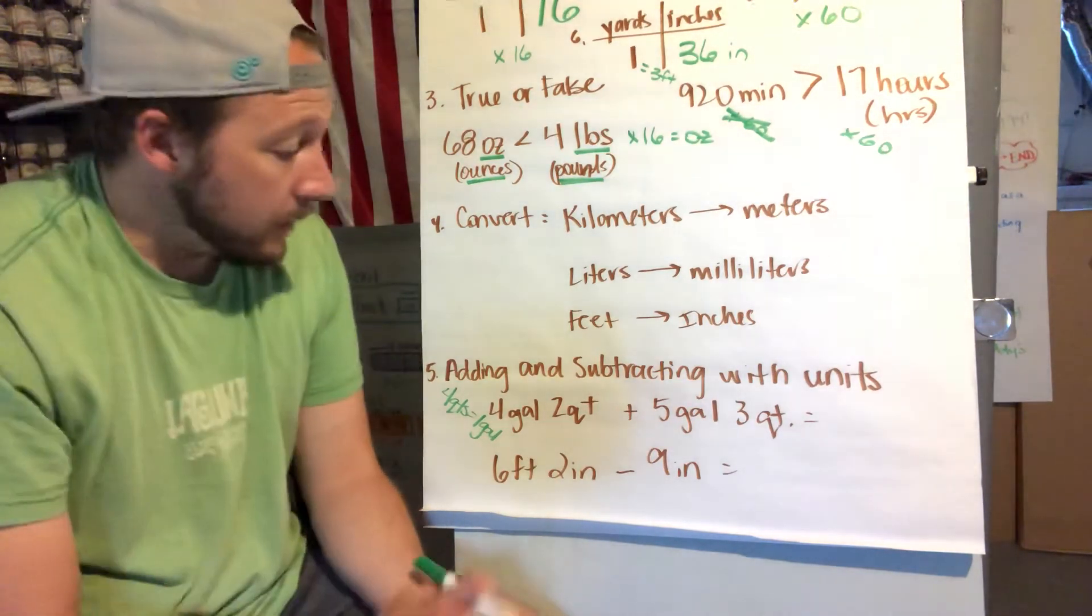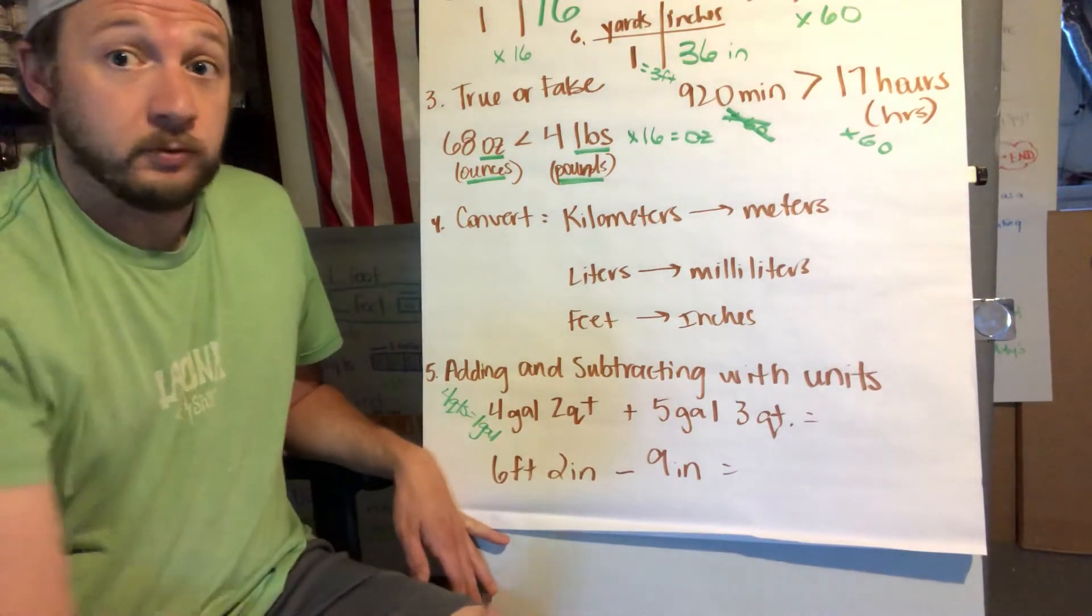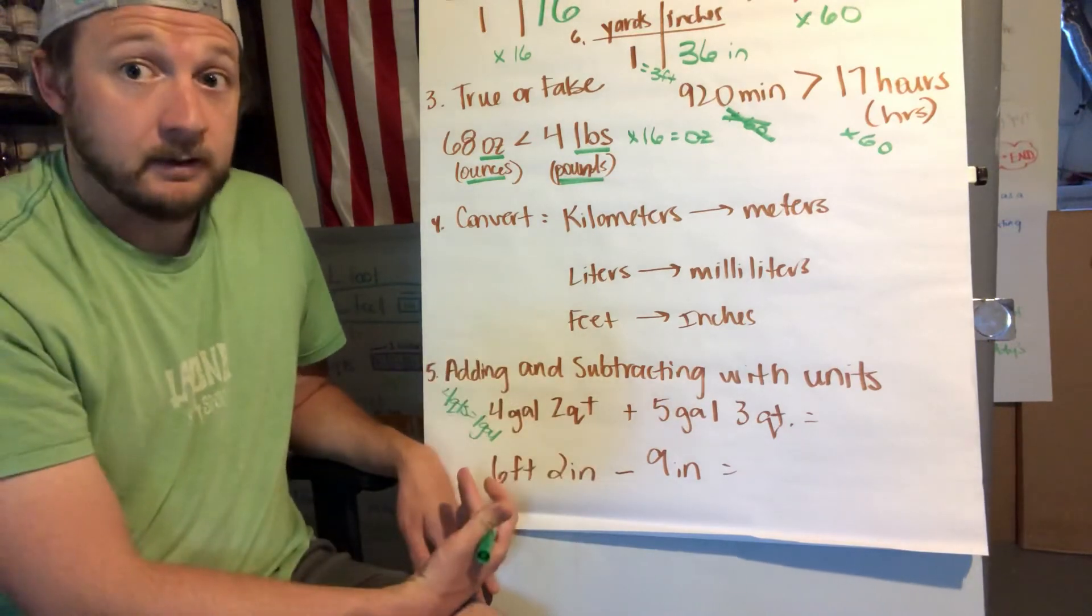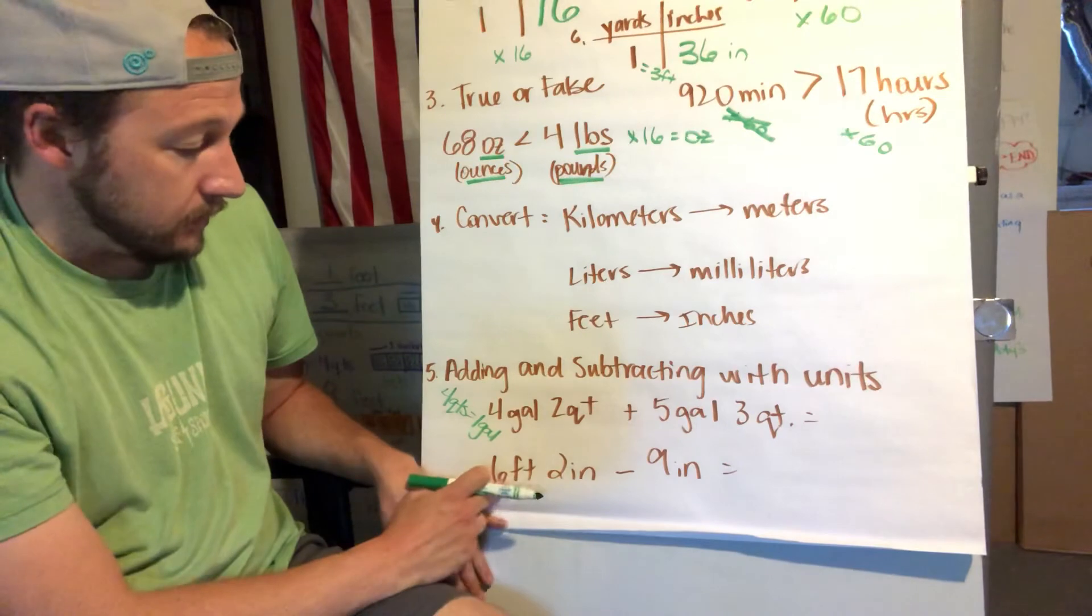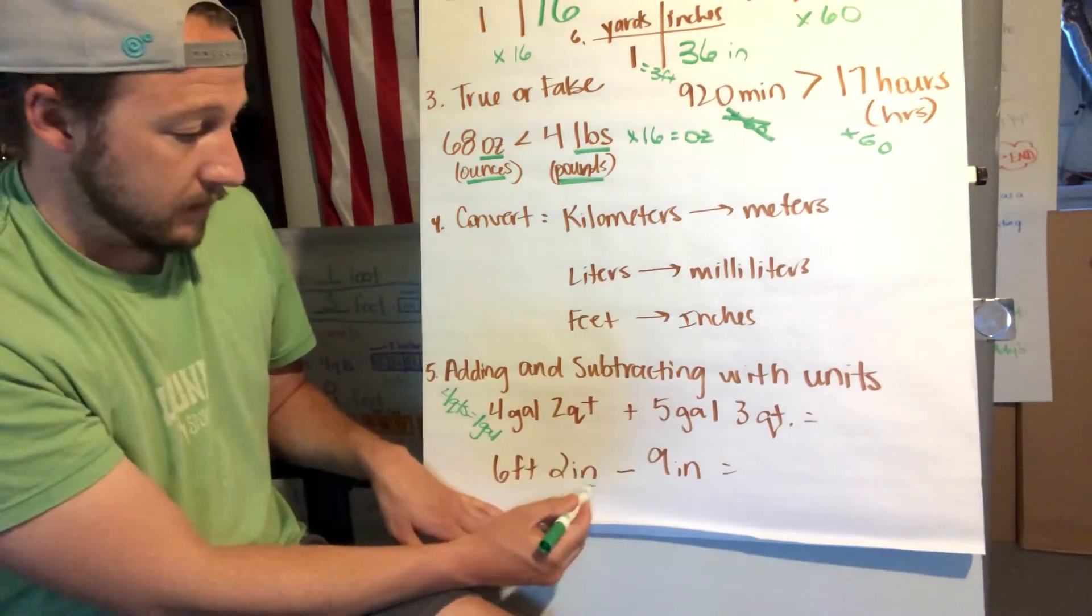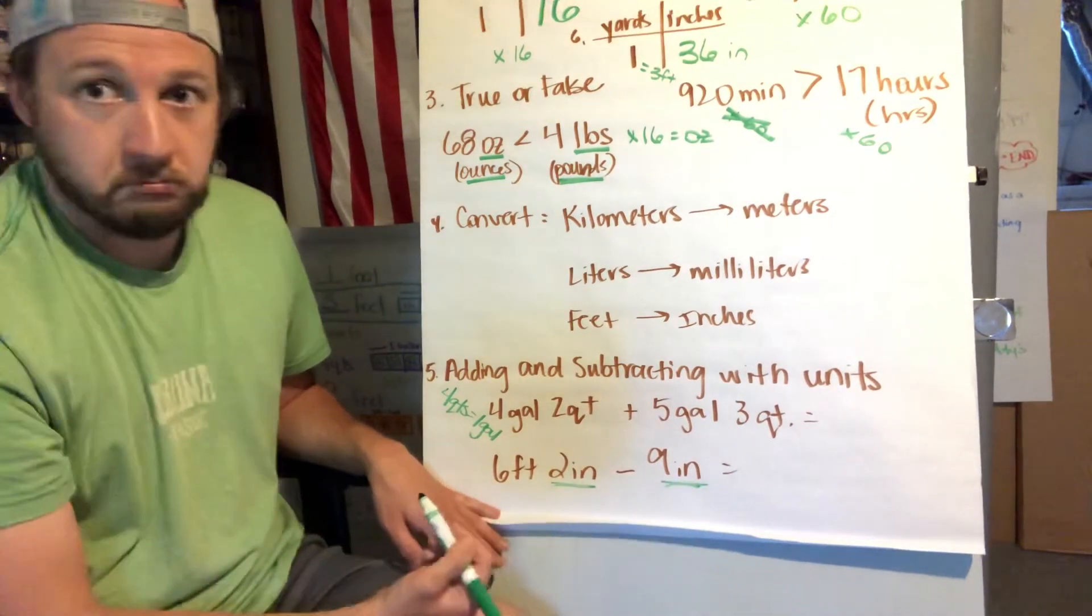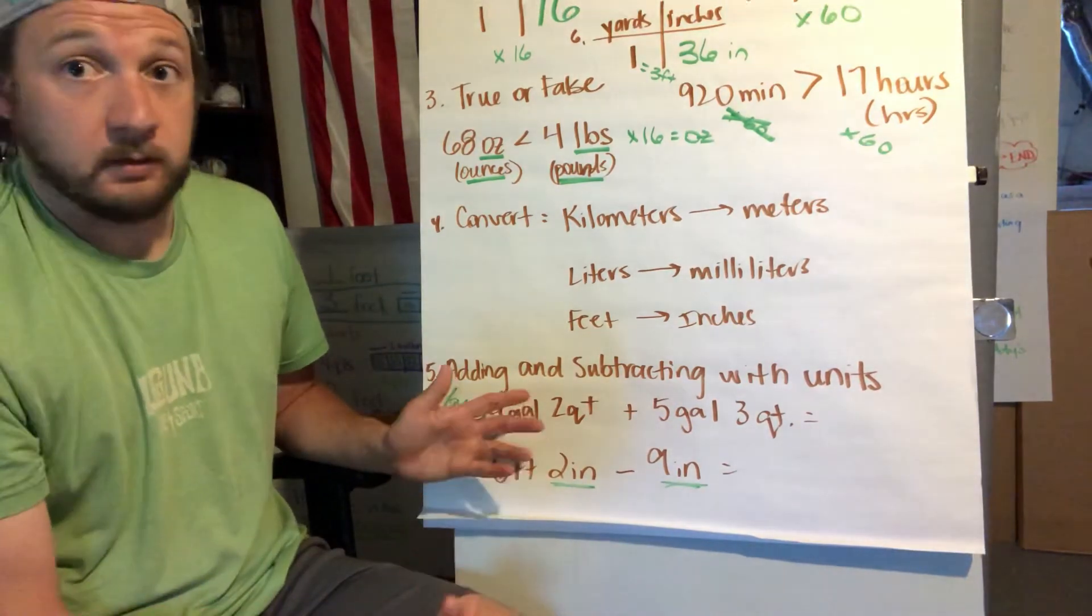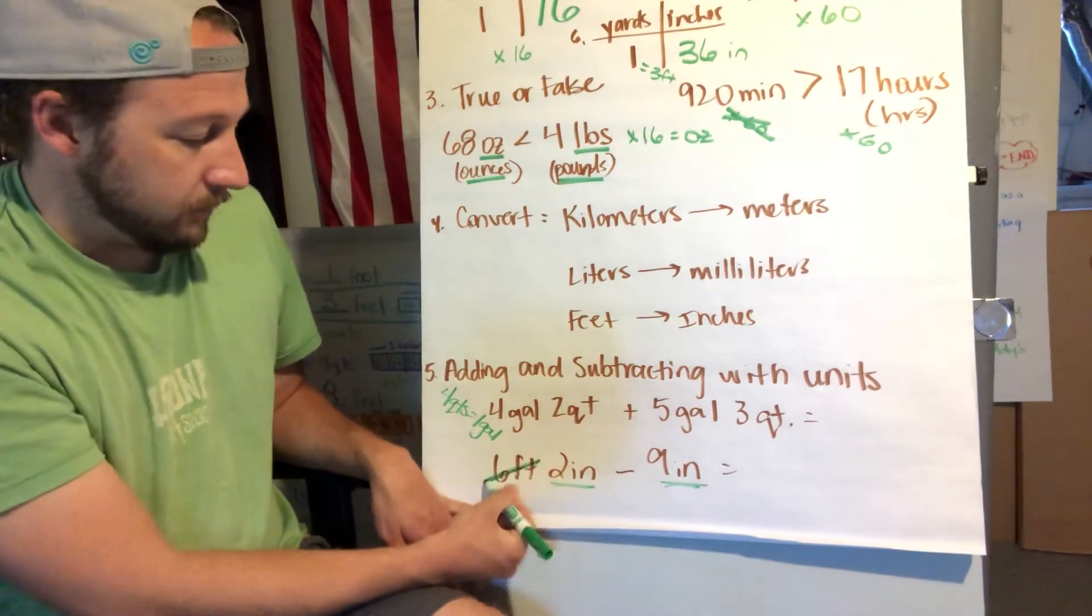I'm not going to tell you how to regroup your units, but I'm just going to tell you you have to regroup your units. And the same thing goes when you are subtracting, except when you're subtracting you regroup your units at the beginning instead of at the end. Okay, so here, six feet two inches minus nine inches. Well, can I subtract nine inches from two inches?